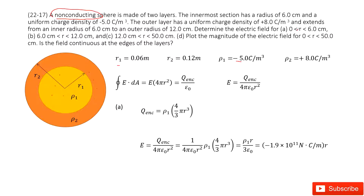Now you need to determine the electric field in three regions: A, B, and C. Region A is in the yellow part — from radius 0 to R1, which is 6 cm. We know Gauss's law tells us the electric flux equals the net charge enclosed divided by epsilon-naught. The electric flux is E times the surface area, 4πR², so E equals the enclosed charge divided by 4π·epsilon-naught·R².